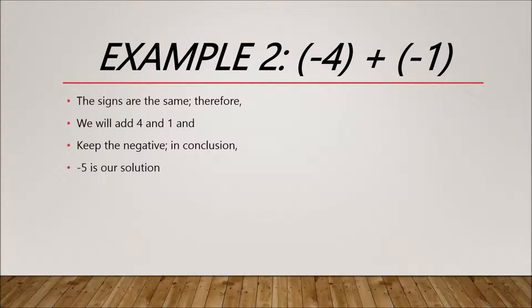Example 2: -4 + -1. These two numbers have the same signs, so we just add 4 and 1 and keep the negative, which means -5 is the final answer.